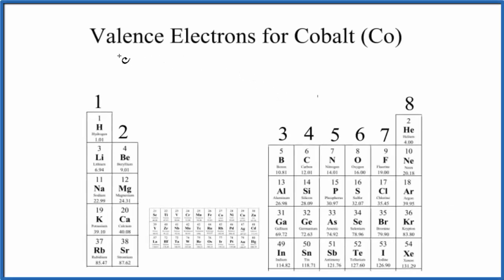In this video, we'll look at the number of valence electrons for cobalt, that's CO. When we look at the periodic table, the main group elements, like group 1, they follow a regular pattern.